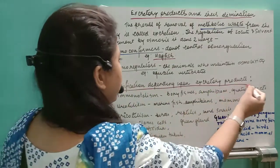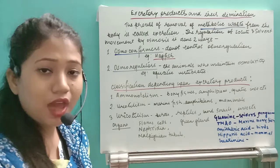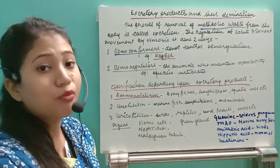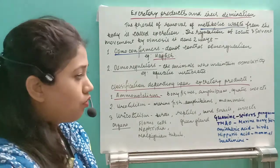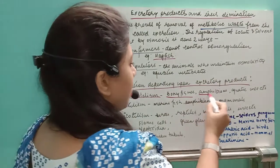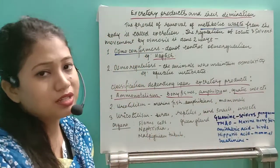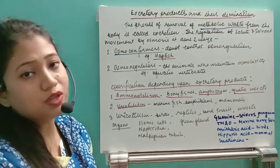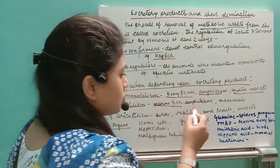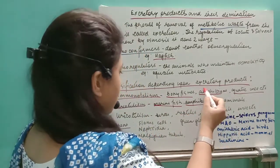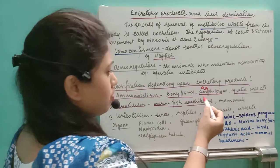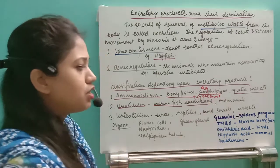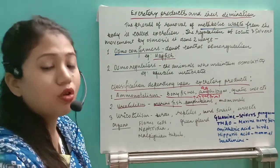There are different types of organisms classified by their excretory products. First, ammonotelic organisms release ammonia — examples include bony fishes, aquatic amphibians, and aquatic insects. Second, ureotelic organisms excrete urea as their nitrogenous waste product — examples include marine fishes, terrestrial amphibians, and all mammals.